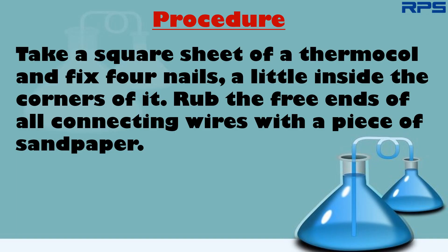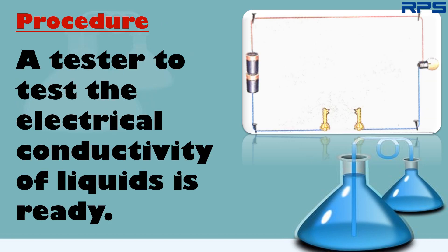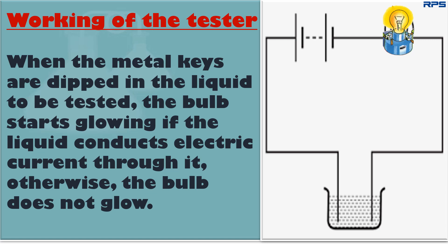Take a square sheet of thermocol and fix four nails a little inside the corners of it. Rub the free ends of all connecting wires with a piece of sandpaper. A tester to test the electrical conductivity of liquids is ready as shown in the figure. When the metal keys are dipped in the liquid to be tested, the bulb starts glowing if the liquid conducts electric current through it; otherwise, the bulb does not glow.